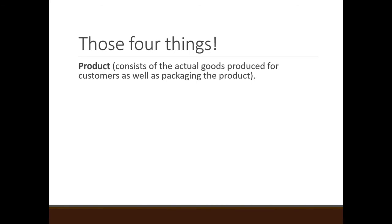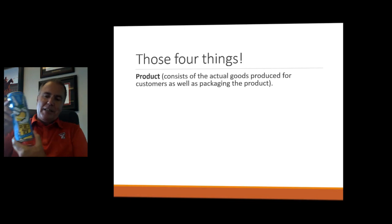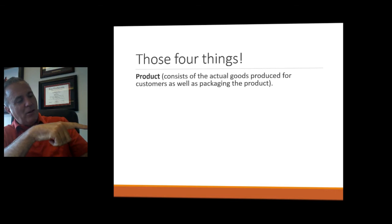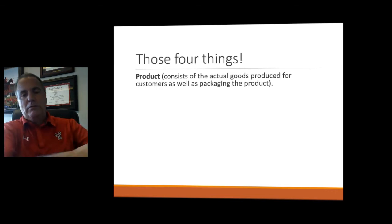Product is the actual good produced for customers, as well as the packaging of the product. Texas Tech puts a product on the field — a football team, basketball team, or baseball team. Then we have a product that's a ticket, the actual ticket in your hand. We sell things like Reese's peanut butter cups — the actual product. For example, this P's Tea. That's the product, and there's the packaging. It's tea and lemonade, also known as an Arnold Palmer.